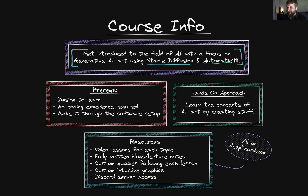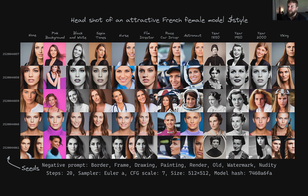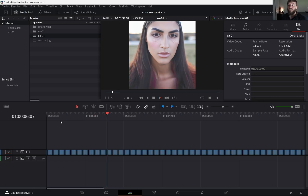For prerequisites, we only need to have the desire to learn. There's no coding experience required, and as long as you can make it through the software setup and installation and generate your first image using AI, you will be ready to take this course. The course is hands-on — we'll be learning the concepts of AI art by creating lots of stuff, lots of images. We will be creating things like images with a pink background, black and white, the year 1850, the year 1950, the year 2000, in the style of a Viking — so many different possibilities and all kinds of art.